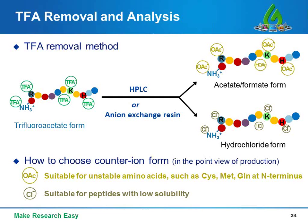Acetate or formate is a weak acid, while hydrochloride is a strong acid. The choice of non-toxic counter ion plays a key role in peptide production and can significantly reduce the risk of failure during ion exchange. For peptide sequences with unstable amino acids such as cysteine, methionine, and N-terminal glutamine, acetate or formate is the best choice. For custom peptides with low solubility, hydrochloride is the best choice.